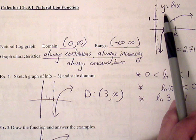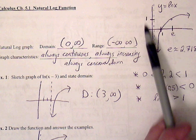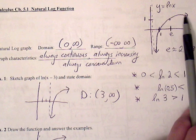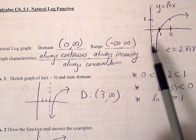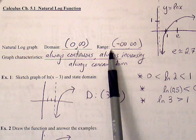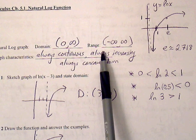Natural log of x has a vertical asymptote at x equals 0, and the graph is going to increase to the right of that vertical asymptote. The domain for our natural log graph is from 0 to infinity, and the range is all real numbers.